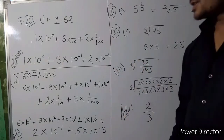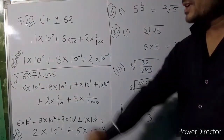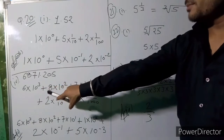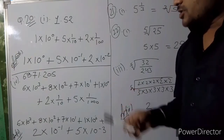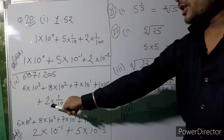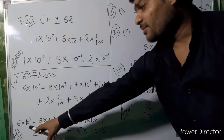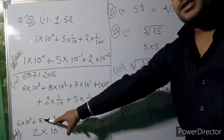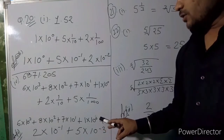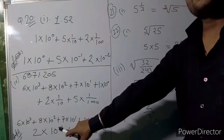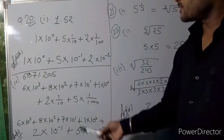Next, convert 68712.05 into standard form: 6 × 10³ + 8 × 10² + 7 × 10¹ + 1 × 10⁰ + 2 × 10⁻¹ + 5 × 10⁻³. After the decimal point, 2 is in tenths place (10⁻¹) and 5 is in thousandths place (10⁻³). That is your standard form.